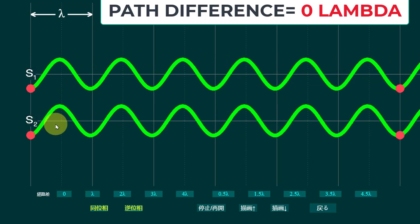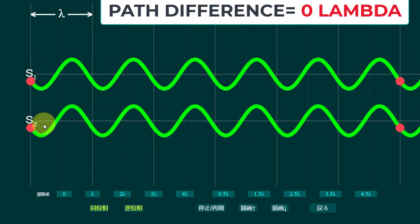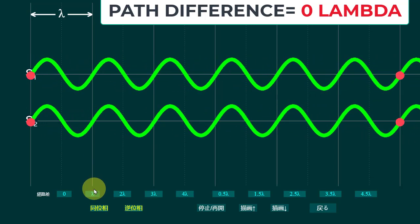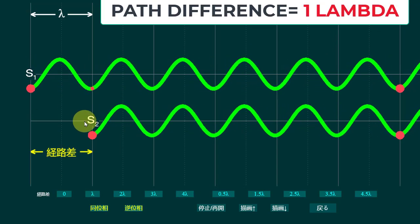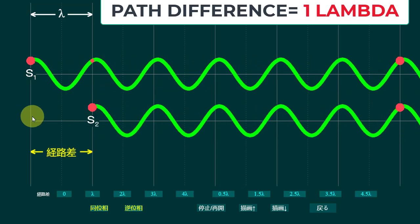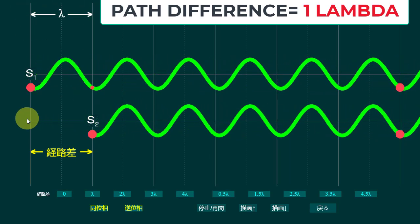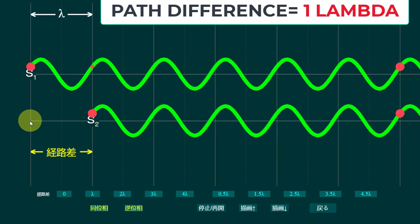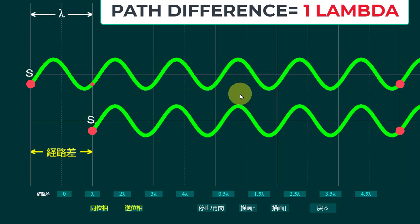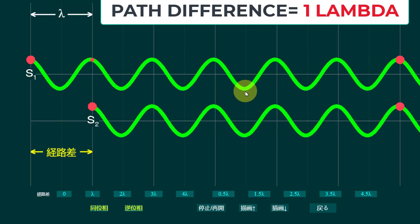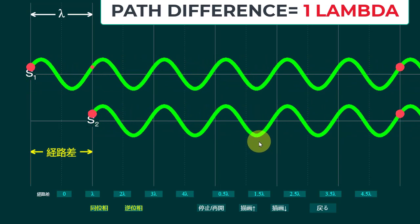Now just observe: if I move the S2 wave one wavelength ahead — I am clicking on lambda — now there is a path difference of one wavelength, as you can see the distance lambda is shown here. So there is a path difference of one wavelength between the two waves. But still observe that the crest is facing the crest and the trough is facing the trough, so the interference is still constructive.